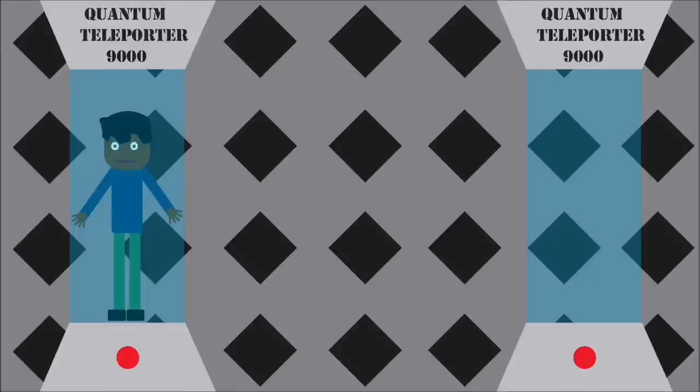Well what we do is, we record the quantum state of every single one of the seven octillion atoms in your body. And then using quantum entanglement, transfer the recorded quantum state to another group of seven octillion atoms which are entangled with the atoms in your body, creating another copy of you.